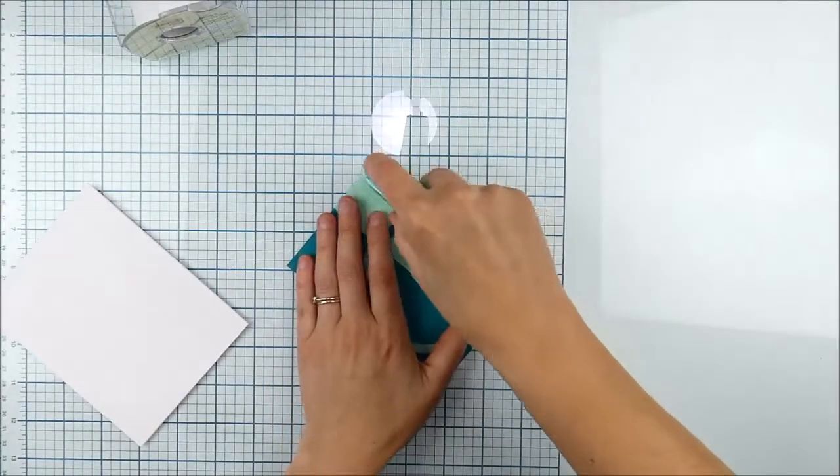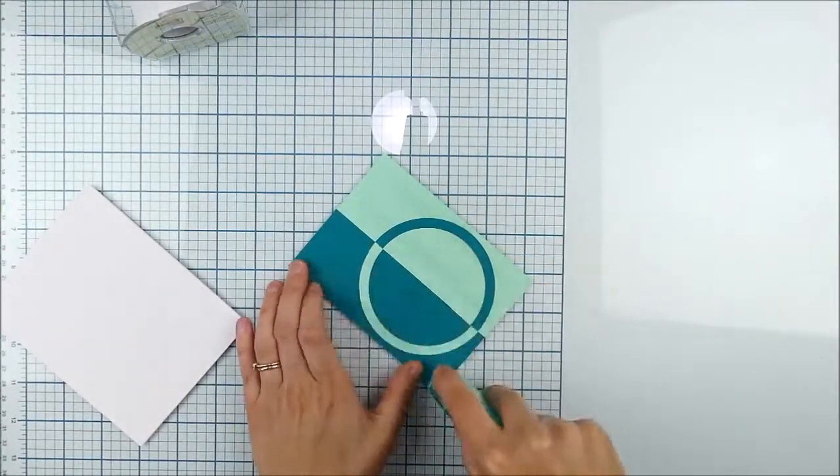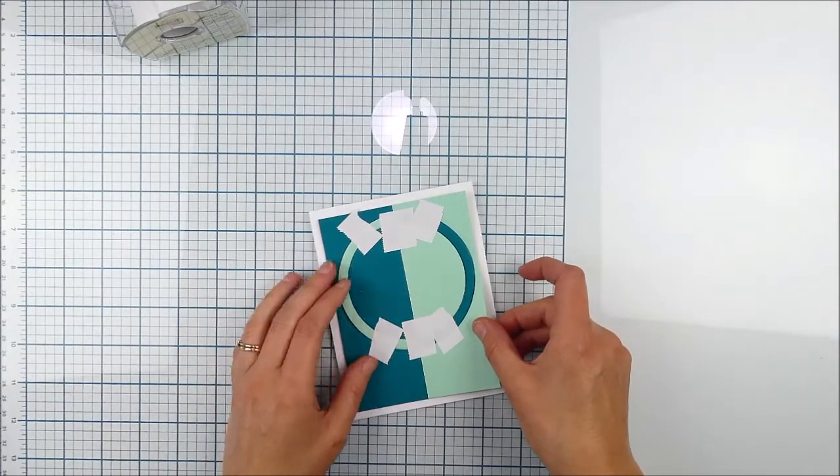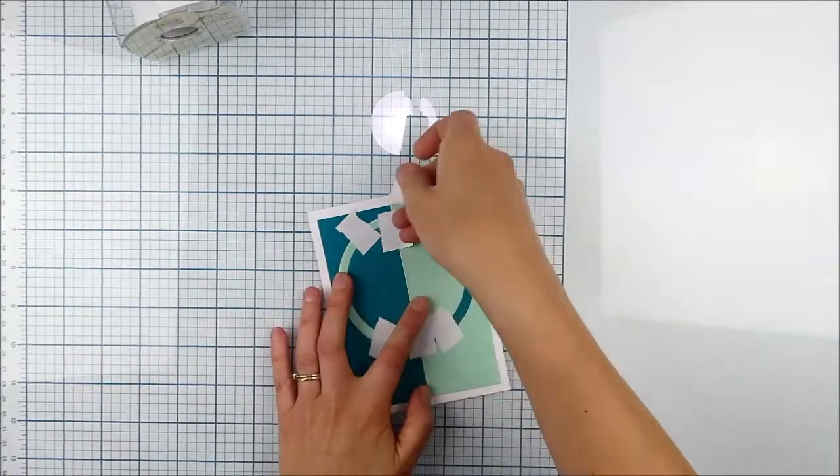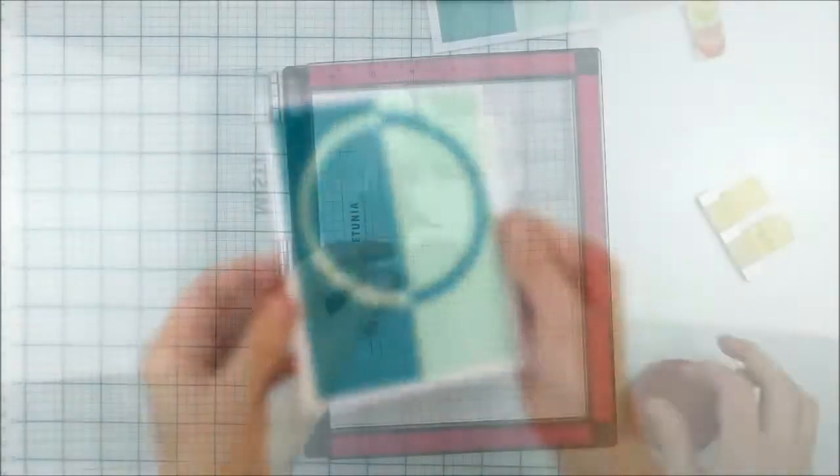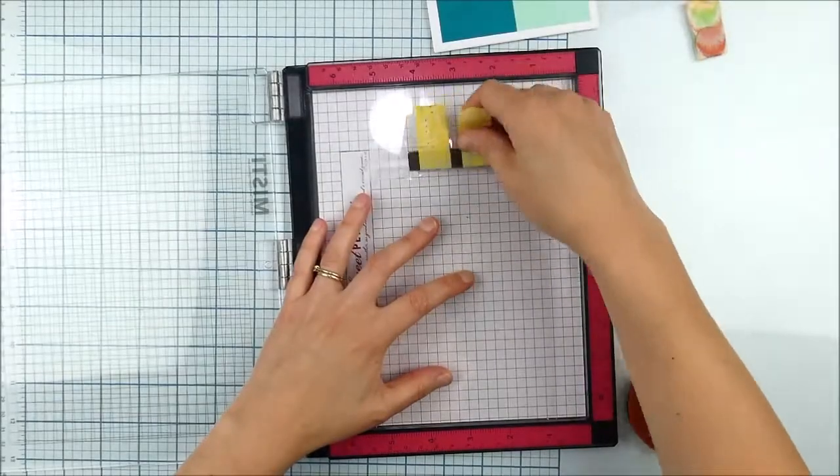A little more of that post-it tape just to hold everything in place and then I can turn this over and grab my tape runner and just make sure I put plenty of adhesive there on the back, making sure I have every little bit of it covered. Then I can adhere it like that directly onto my card base, peel all that post-it tape off and everything's perfectly lined up in that kind of fun color block design.